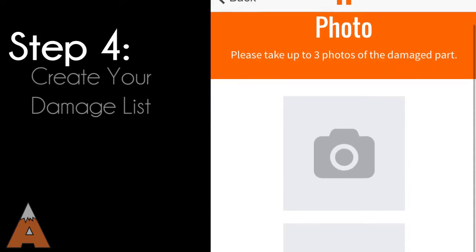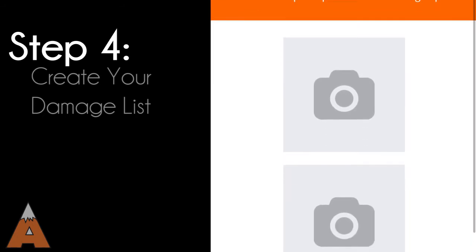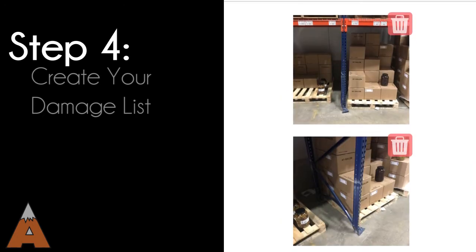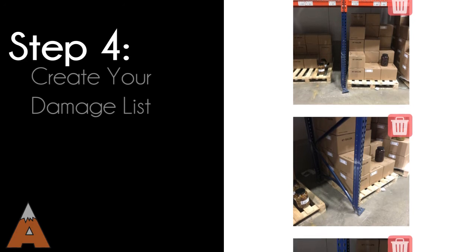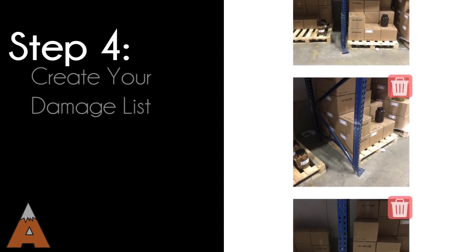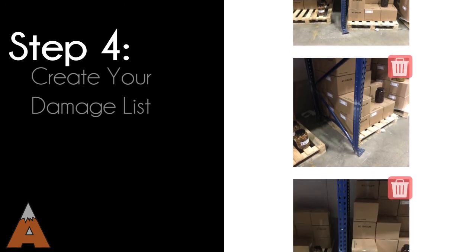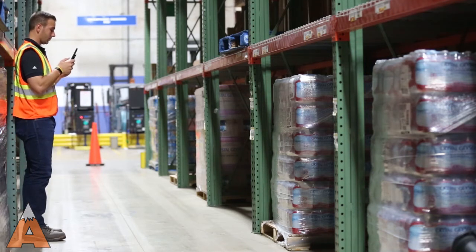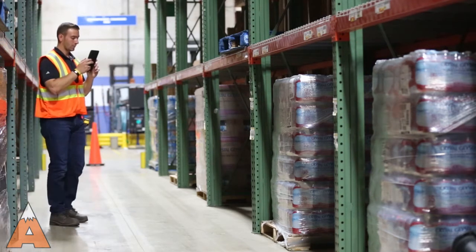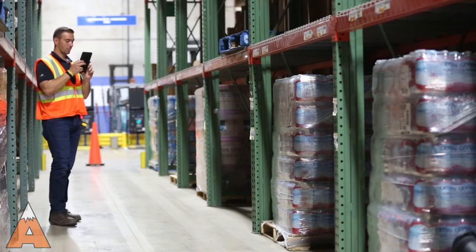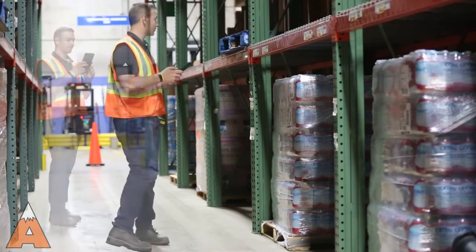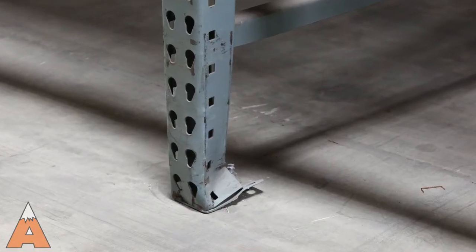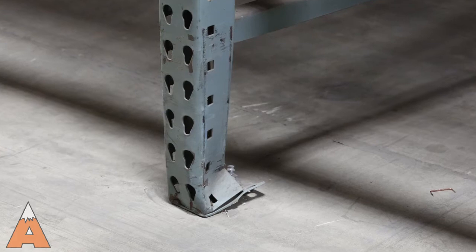Now you are ready to create your damage list. Take up to three photos of the rack damage. The first photo should show the upright and first beam level from a distance to get a good image. The second photo should be up close showing the damage clearly. The third photo should be any additional details needed, such as back of the column if damaged, foot plate issues, connection to beam, column guard, etc.